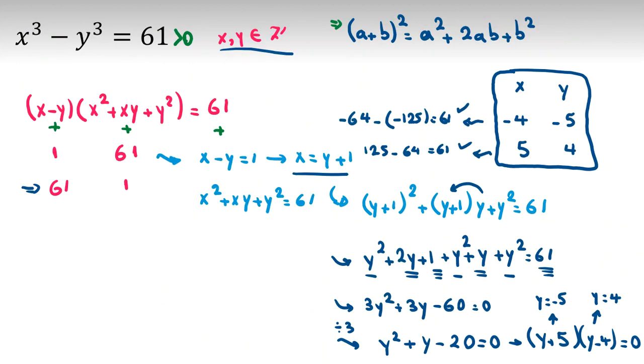So our only answers are these two cases: negative 4, negative 5, and 5, 4. If you want to learn more ideas, you can send a message to my WhatsApp number. And please don't forget to subscribe, turn on the notification, and like the video. Thanks, bye-bye.